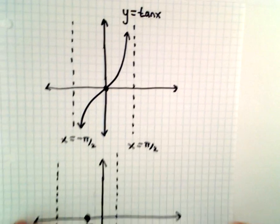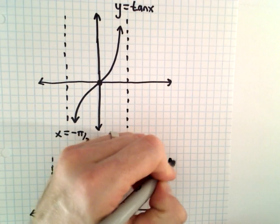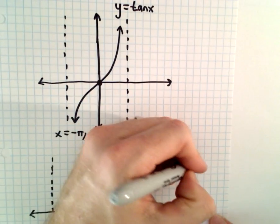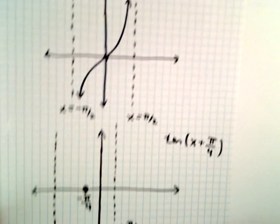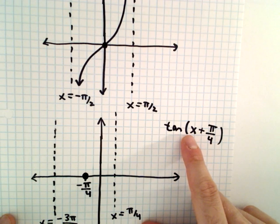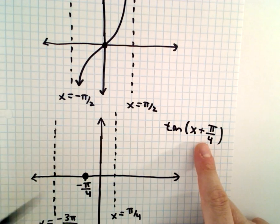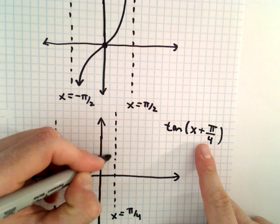If you wanted to, you could always plot some extra points. We're graphing here tangent of x plus pi over 4. And if you substitute in x equals 0, we'll get tangent of pi over 4, and that equals positive 1.